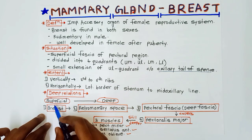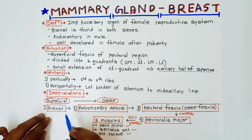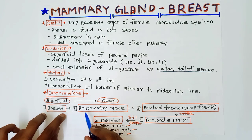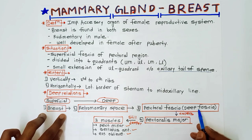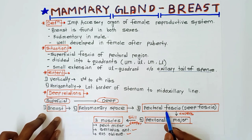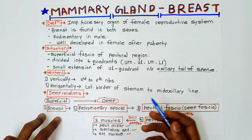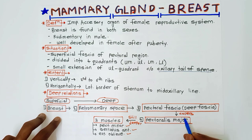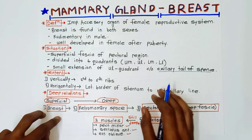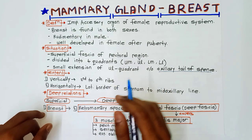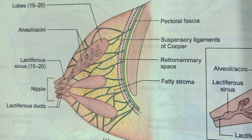Next are the deep relations of the breast, going superficial to deep. Most superficially there is the breast, then the retromammary space, then the pectoral fascia or deep fascia. Between the breast and pectoral fascia there is the retromammary space — this may be an MCQ in your exams. The pectoral fascia covers pectoralis major muscle, and still deeper there are three muscles: pectoralis minor, serratus anterior, and external oblique. You can draw this diagram in your exam.